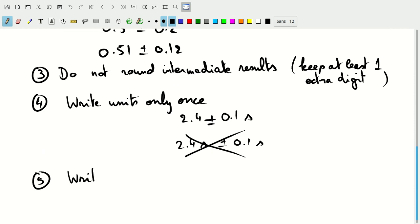And similarly, write the scientific notation only once. So 2.4 times 10 to the fifth, if there's an uncertainty here, then what we would do is 2.4 plus or minus 0.1 times 10 to the fifth seconds. That's how we write the uncertainty.